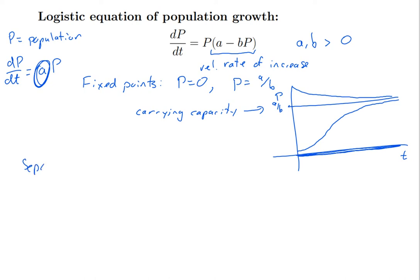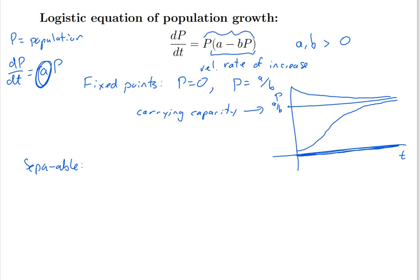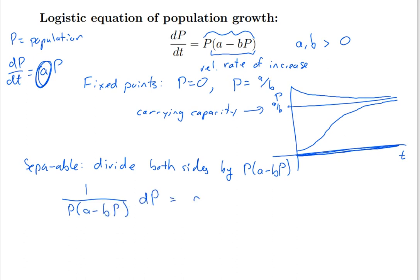We want to solve this differential equation. It's non-linear because of the p times p on the right-hand side, but it is separable. That means I have to move all the p's to the left by dividing both sides by p(a minus bp), leaving 1 over p(a minus bp) dp = dt. Integrating the right-hand side gives t + c. The left-hand side is the challenging part — integrating a function that is one divided by a quadratic in p. The method to use is partial fractions. That's a rational function — one polynomial over another — and they can be integrated with partial fractions.